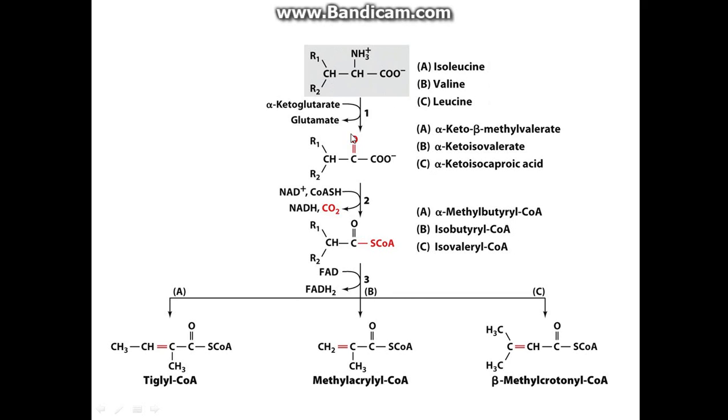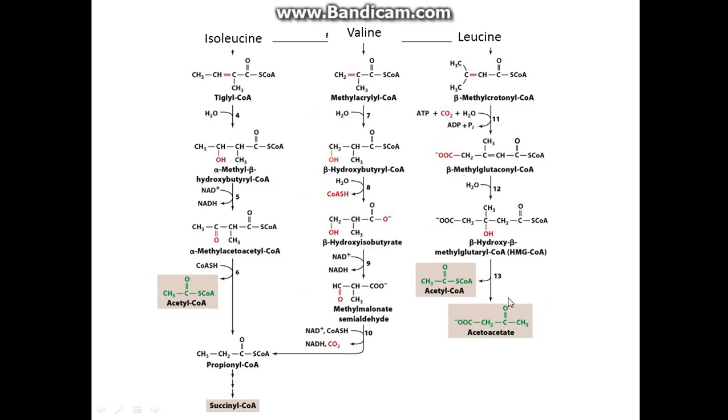That follows these three steps. As you can see, transamination to form glutamate, NAD and CoA-SH to NADH, add CO2, attaching the CoA-SH there, and then FAD to FADH2. Then it continues down this pathway here, which I'll just go over the next slide for.